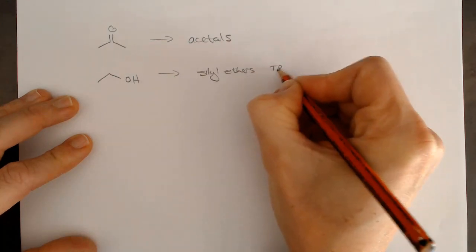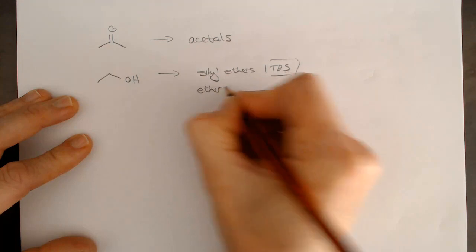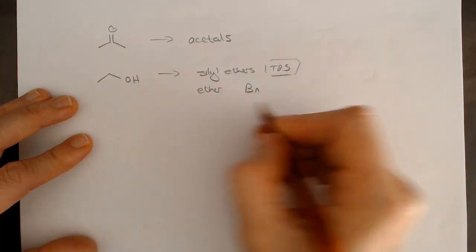We've got protecting groups for alcohols, and that's our silyl ethers. TBS is the important one, and then we've got a normal ether, which a good example is a benzyl ether.